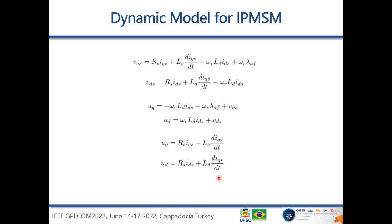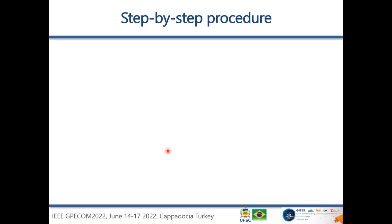Regarding the dynamic model of the interior permanent magnetic synchronous machine, the equations are expressed in the DQ reference frame. For the interior PMSM, the Q-axis and D-axis have different inductances, while the stator resistance is the same for both axes. These equations fully describe the dynamic model of the machine.